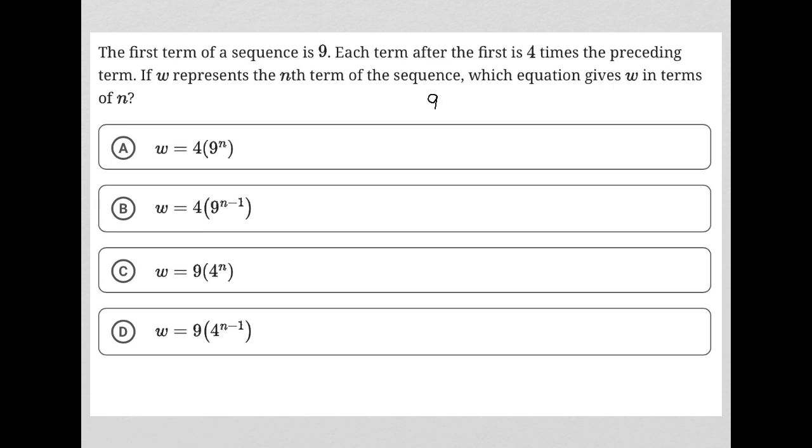So let me just get started with that. So 9, and then 9 times 4 is 36, and then 36 times 4. Let me go to my calculator really quickly. 36 times 4 is 144, and so on and so forth.